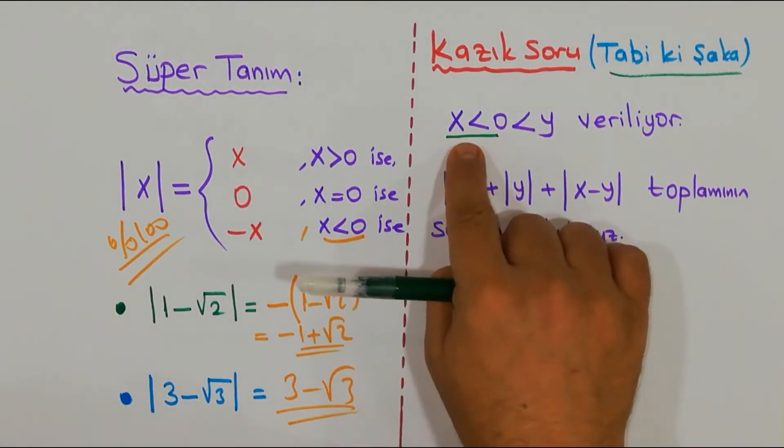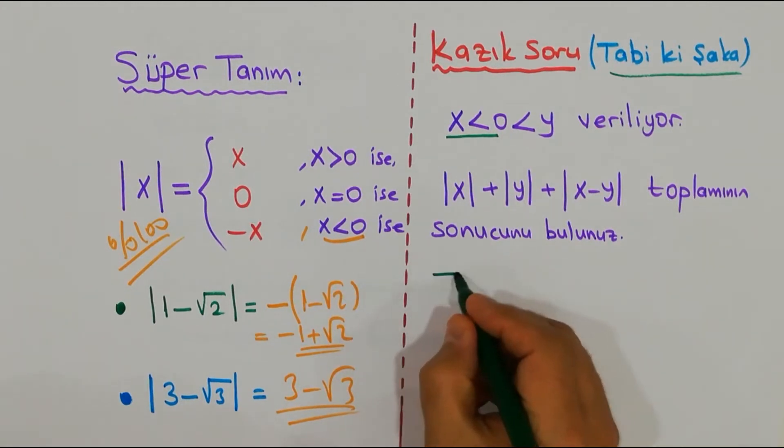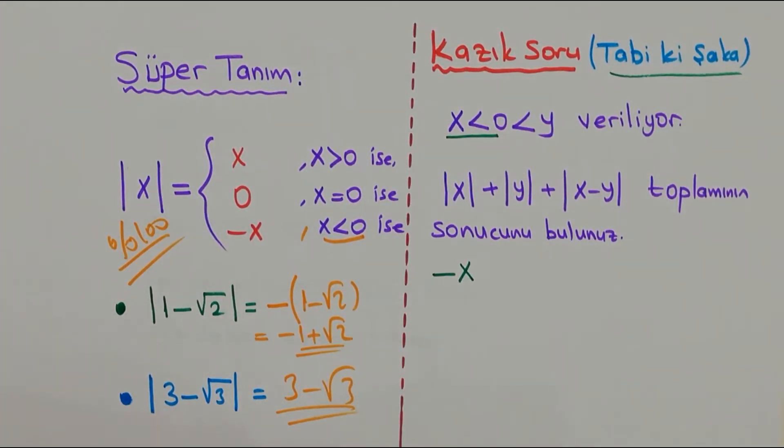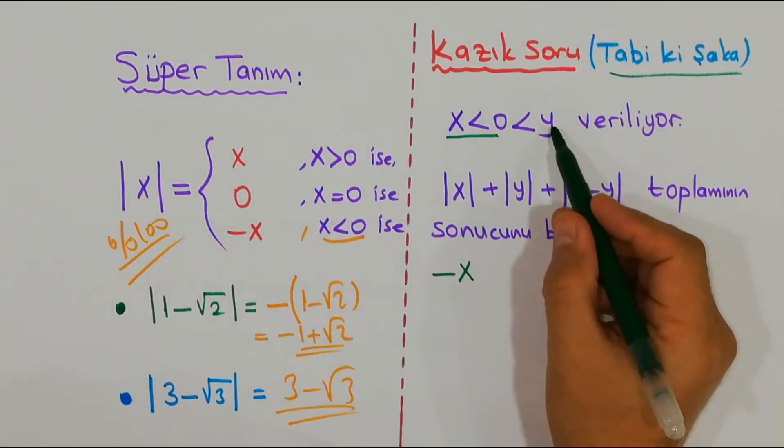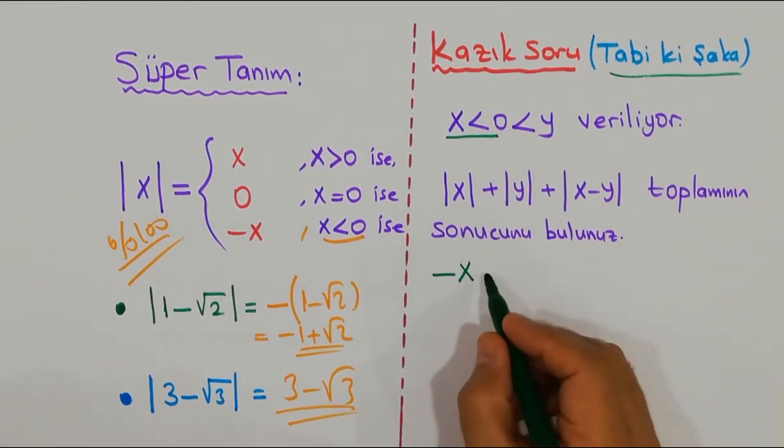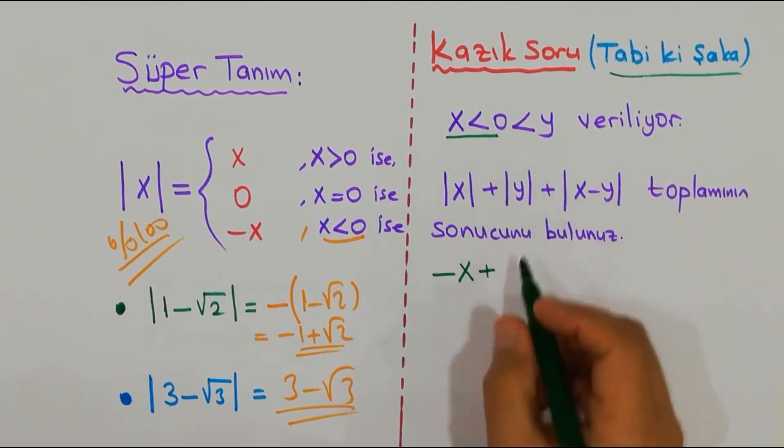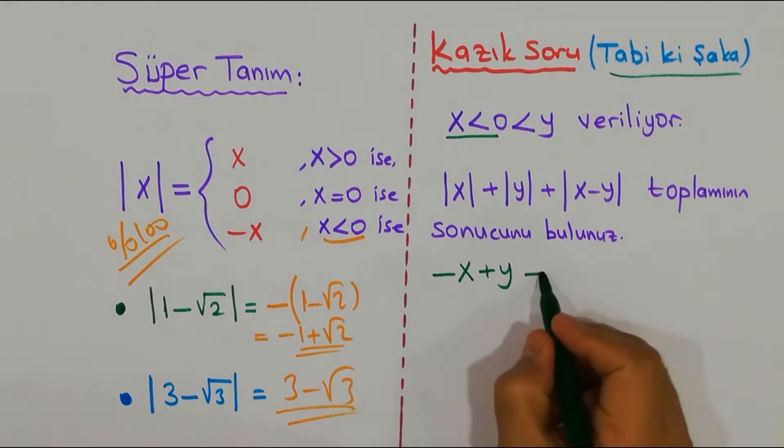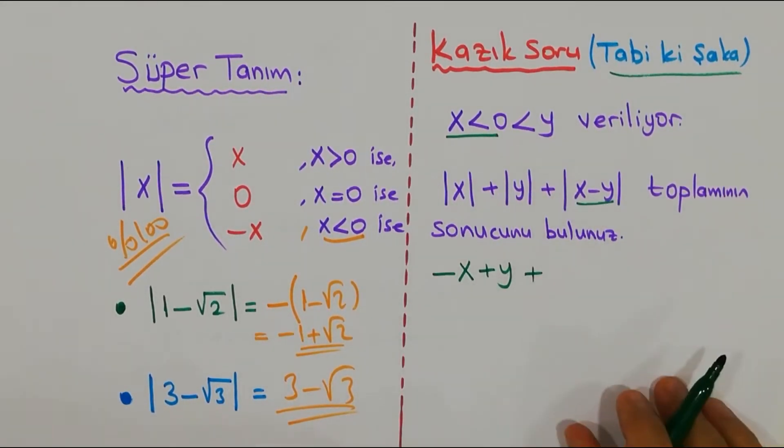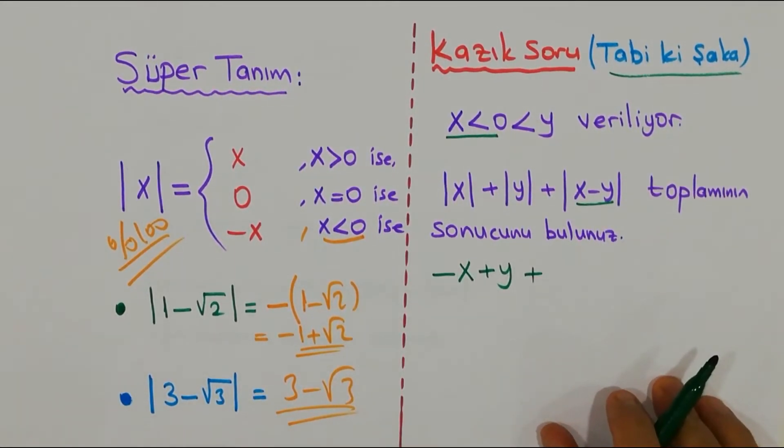x negatif, |x| nasıl çıkar? Negatif. O halde siz önüne bir eksi işareti alıp çıkartmanız lazım, öyle değil mi değerli dostlar? Peki y'ye baktınız, y sıfırdan büyük. O zaman çaktırmadan şu mutlağın kulağından tut at, içindekini olduğu gibi yaz.